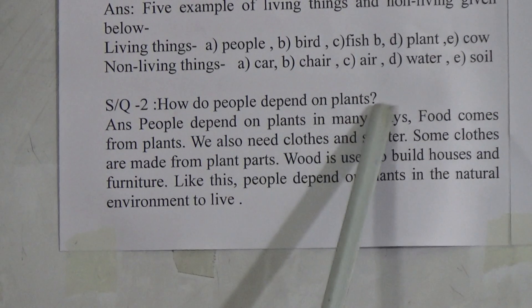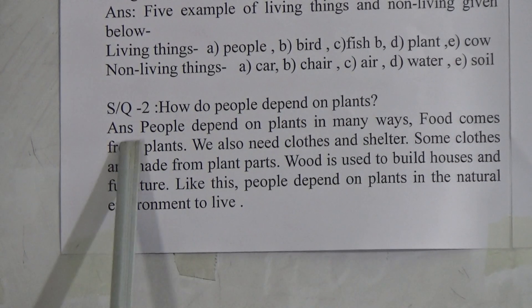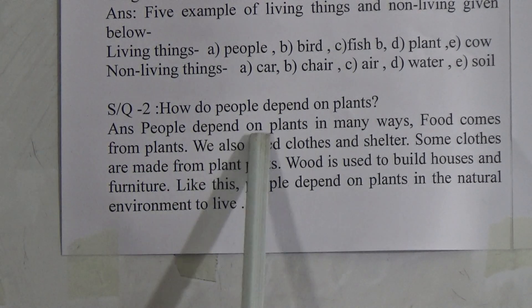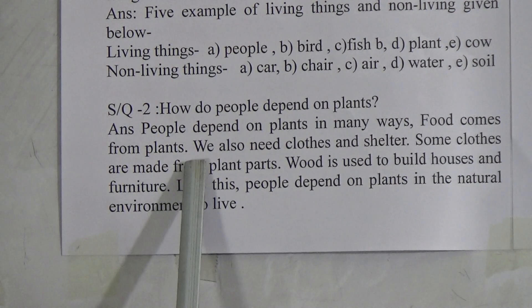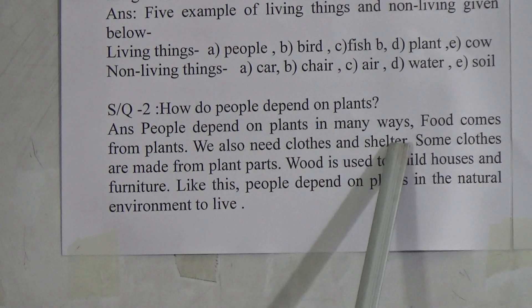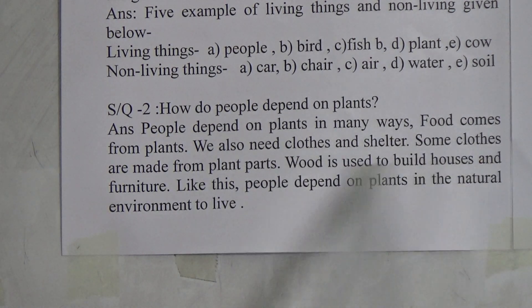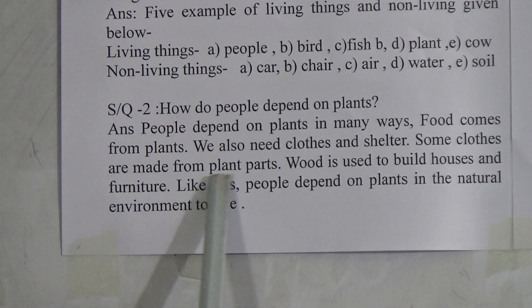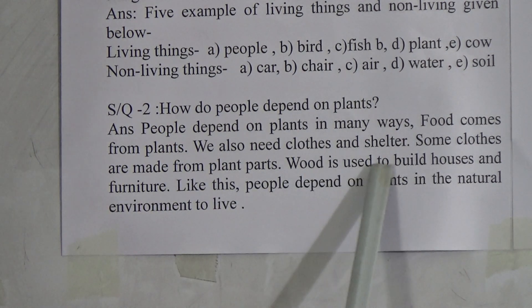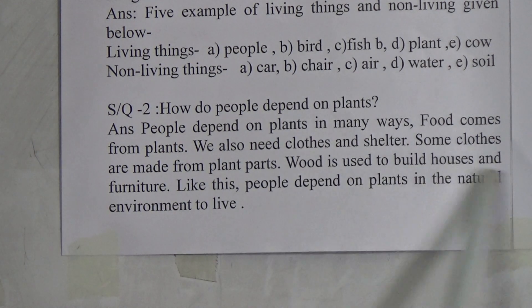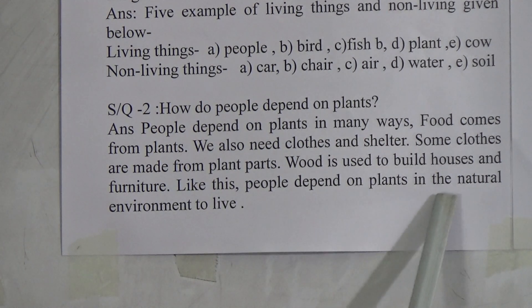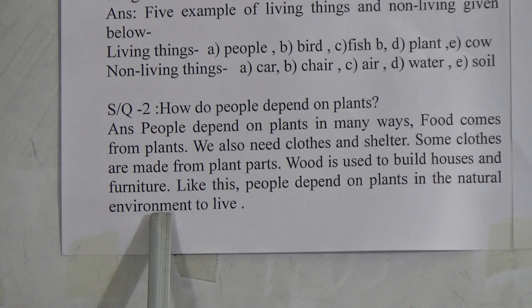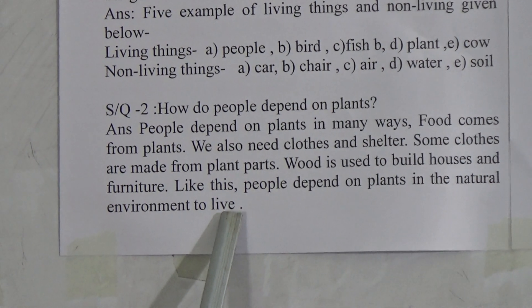Question two: how do people depend on plants? People depend on plants in many ways. Food comes from plants. We also need clothes and shelter. Some clothes are made from plant parts. Wood is used to build houses and furniture. People also depend on plants in the natural environment.